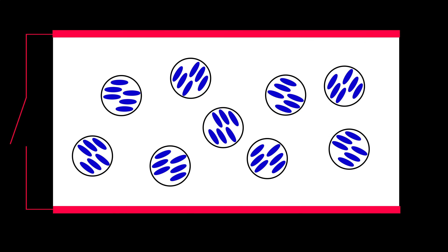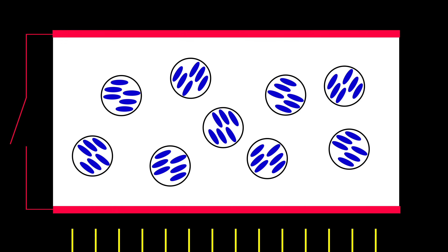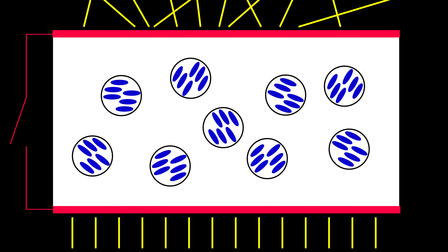So when there's no current running through them, the liquid crystals are randomly oriented inside of the holes, and they scatter light as it passes through, thus making it look opaque.